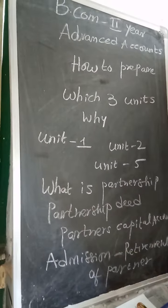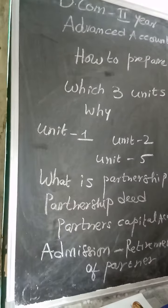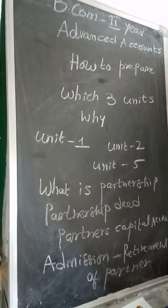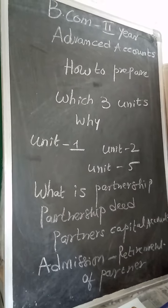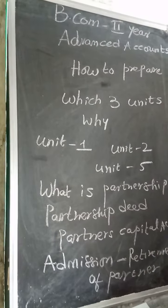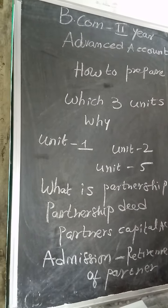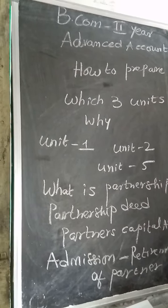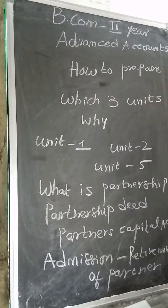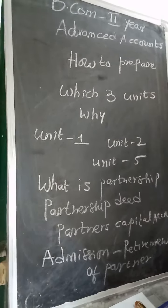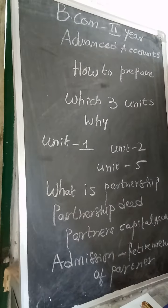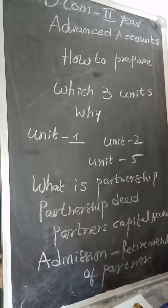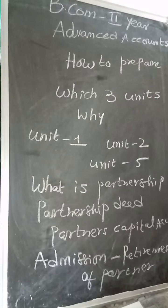The three units to focus on are: Unit 1, which covers partnership — admission, retirement, and death of a partner; Unit 2, which is dissolution and insolvency of the partner; and Unit 5, which covers valuation of goodwill and valuation of shares.